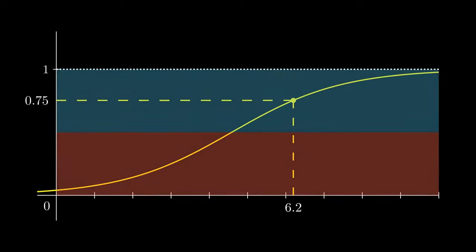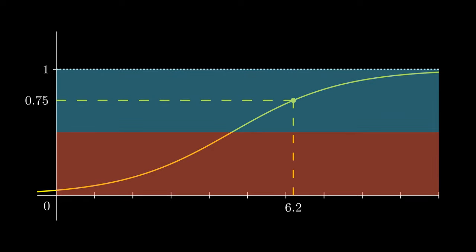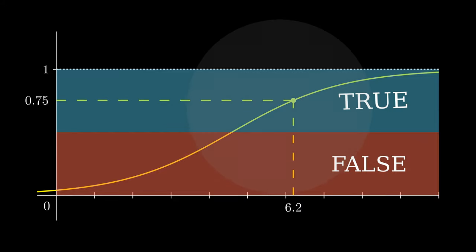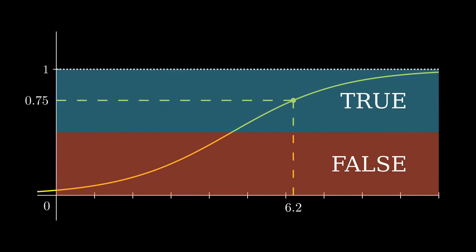If we define a threshold, say 0.5, and anything greater than 0.5 will be true, anything less than 0.5 will be false, we will then predict there will be a flood.